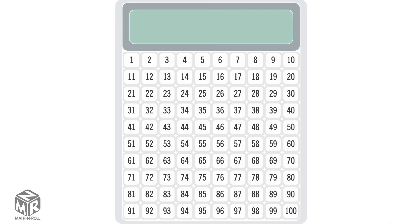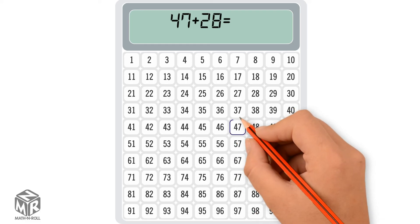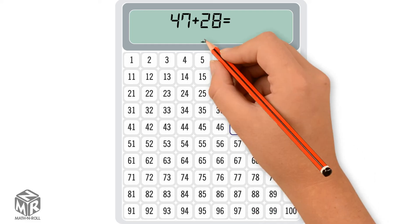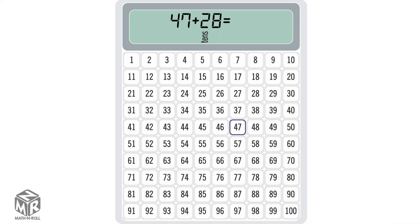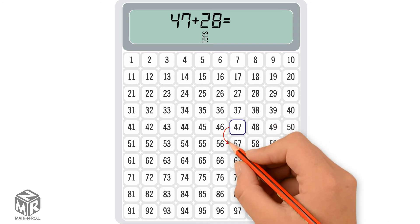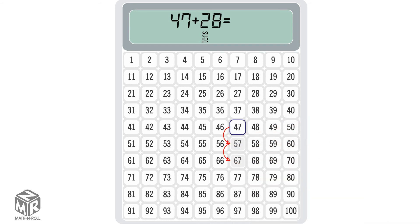Let's try another one. 47 plus 28. We start with the bigger addend, 47. 28 has 2 tens, so we start at 47 and count 2 tens going down the column. We pause at 67.